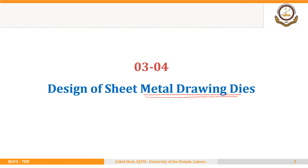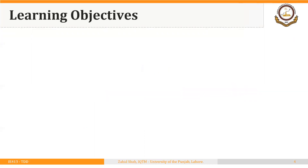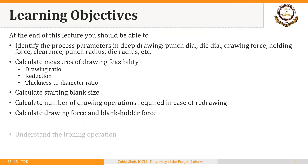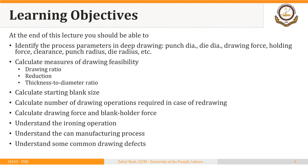Sheet metal drawing is also called deep drawing. At the end of this lecture you should be able to identify the process parameters in deep drawing — these include punch diameter, die diameter, drawing force, blank holding force, clearance between punch and die, punch radius, die radius, etc. You should also be able to calculate measures of drawing feasibility including drawing ratio, reduction, and thickness to diameter ratio, and calculate the starting blank size.